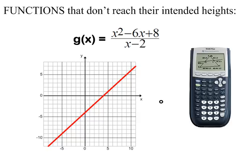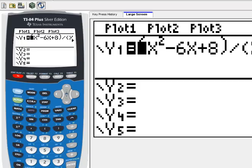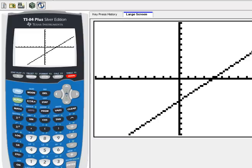Functions that don't reach the intended heights. Here's an example of a function that I'd like you to type into your calculator. Make sure when you do that, when you have a rational expression like this, a fraction, you want to put parentheses in when you actually type it into your calculator. So I have done that here. And just to let you know what it looks like, you type it in. It should look something like this: x squared minus 6x plus 8 divided by x minus 2. And then we're going to graph that on our standard window.